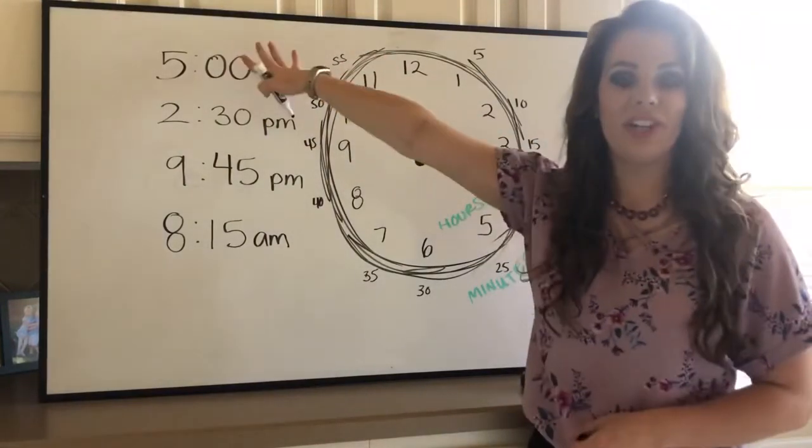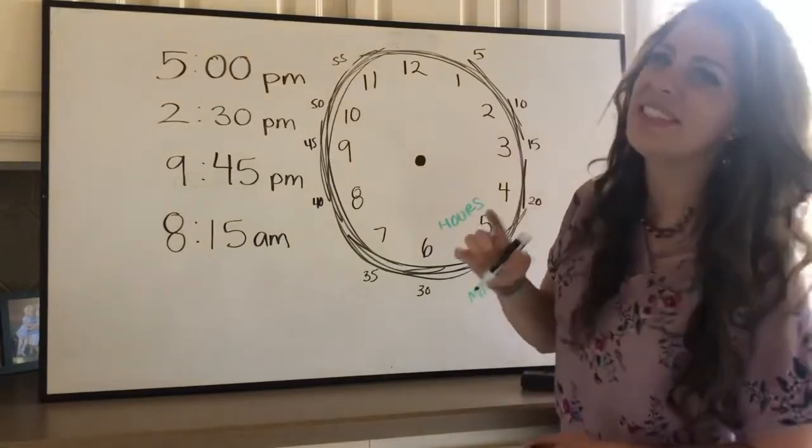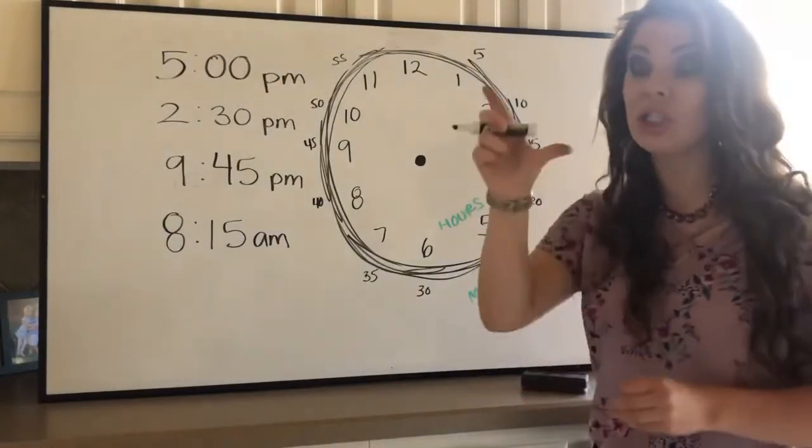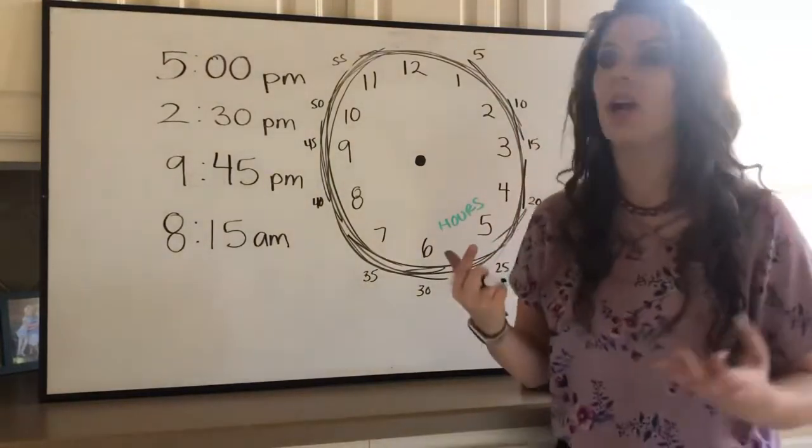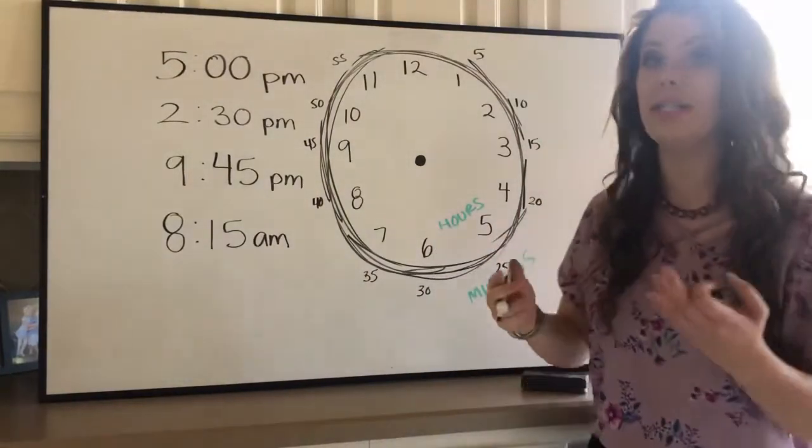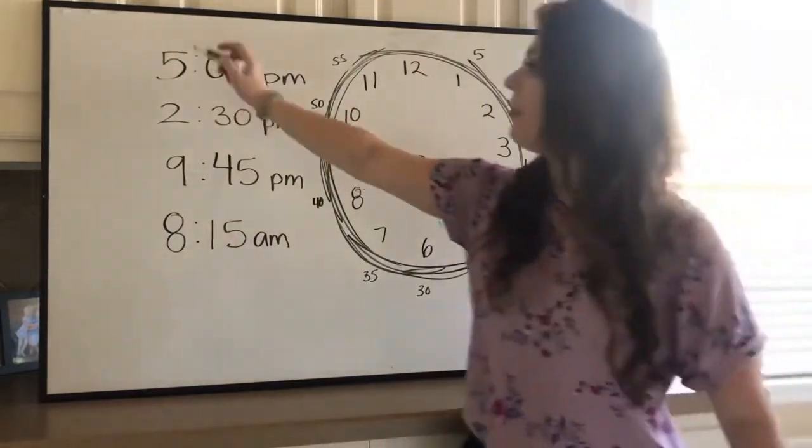And our first time, I think our dinner time was five o'clock. So our smallest hand, our smaller sized hand, that's gonna be for our hours. And that's gonna point straight to the number, very direct. So five, where's our five?